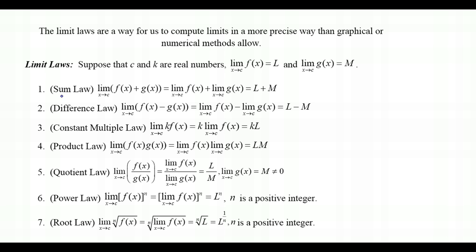The first limit law is called the Sum Law. It says that the limit as x approaches C of f(x) plus g(x) equals the limit as x approaches C of f(x) plus the limit as x approaches C of g(x). So we can split one limit into the sum of two separate limits and compute each individually. Using our hypothesis, this simplifies to L plus M — the limit of a sum equals the sum of the limits.